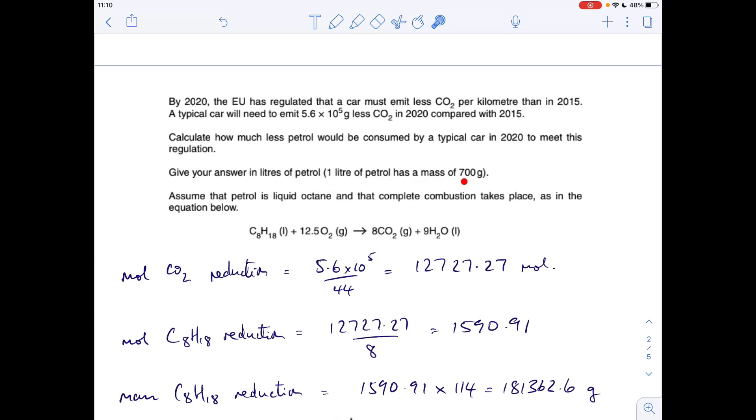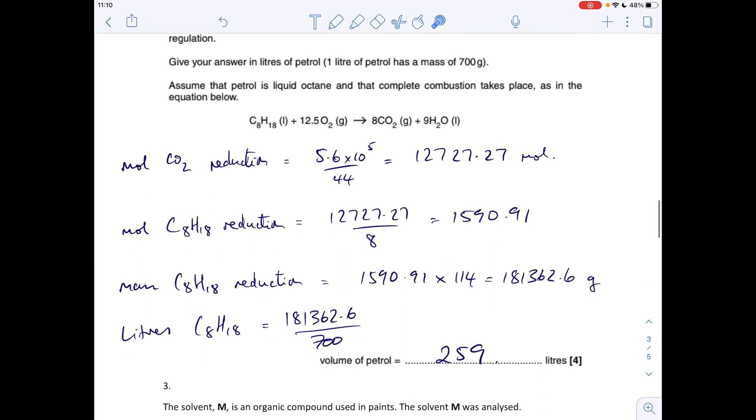The tricky bit now is just getting it into liters of petrol. So we're told that one liter of petrol has a mass of 700 grams. We know the grams of petrol, so if we divide that by 700 we can find out how many liters of petrol and it comes out of 259.